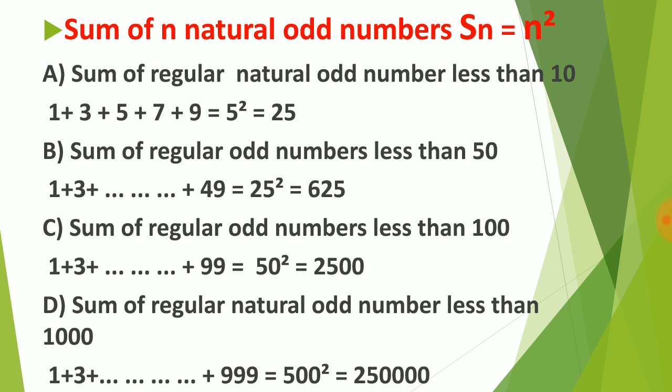The sum of n natural odd numbers can be calculated using the formula n². If we add regular natural odd numbers less than 10, we get 25. Similarly, if we add odd numbers less than 50, we get 625.